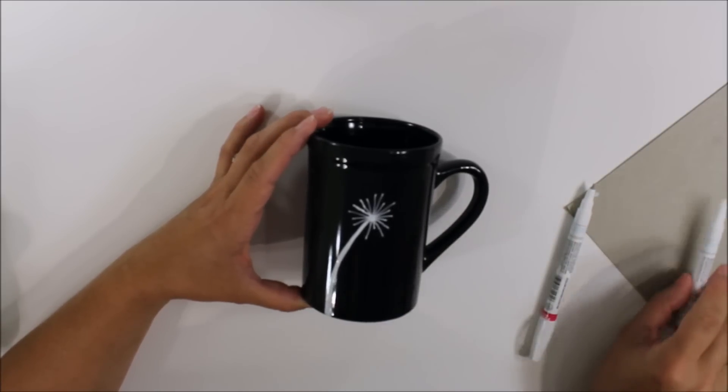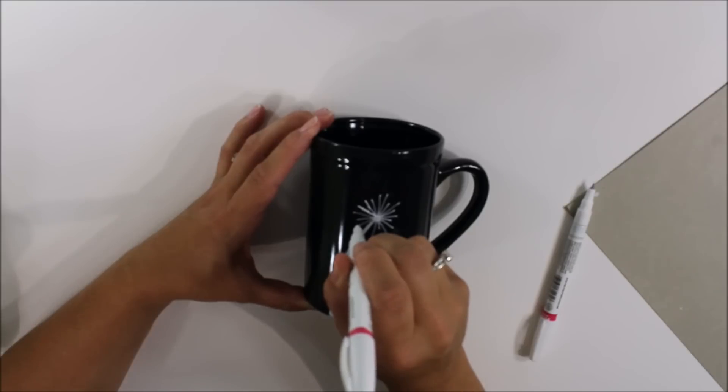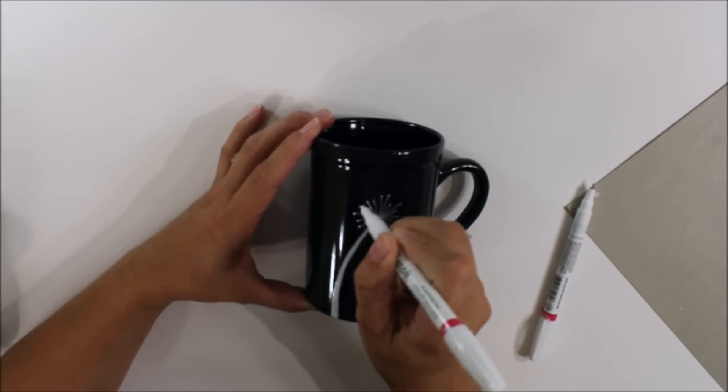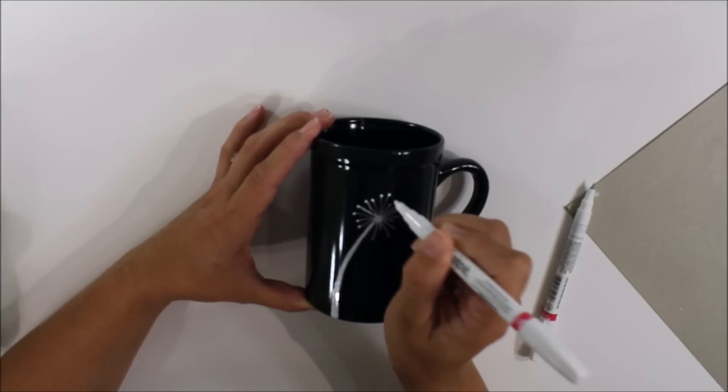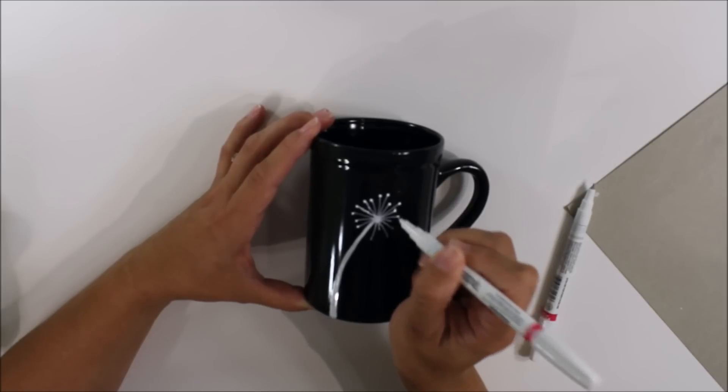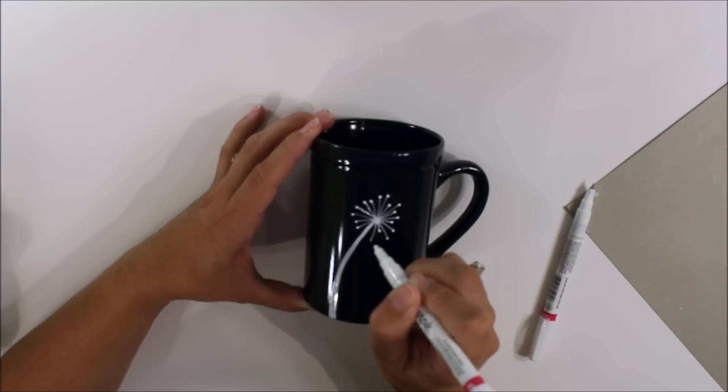And then what I've done is I've switched back to the larger one, and I'm just going to put a dab, a circle dab, just a little dot on the end of each of those points, and that's going to kind of finish off that line to my dandelion, and I'm just dotting around.